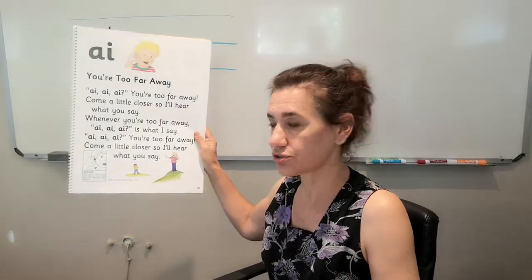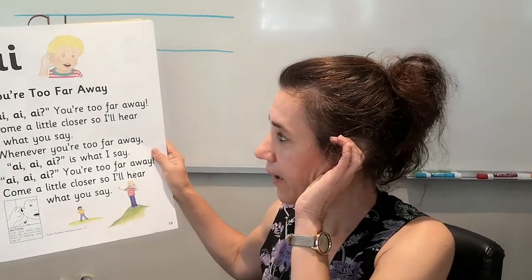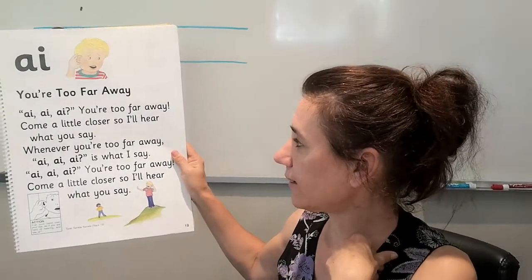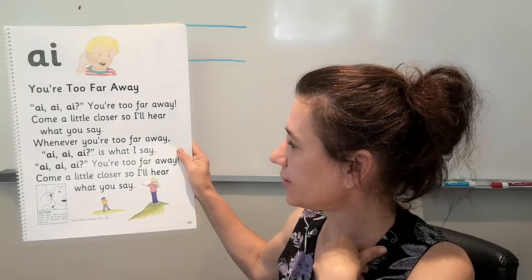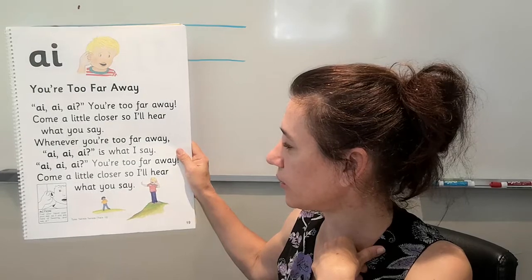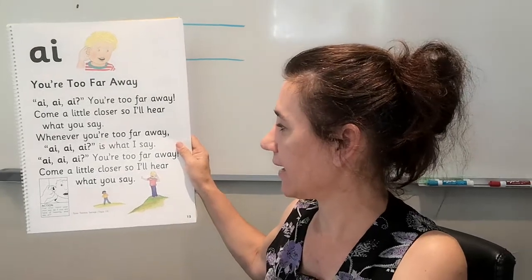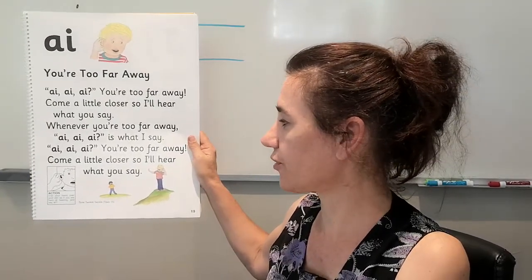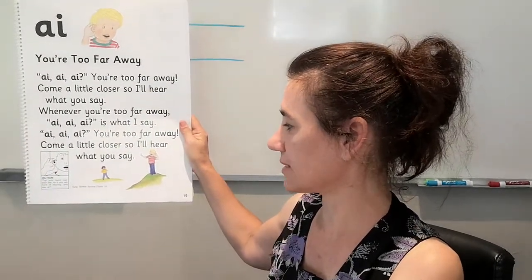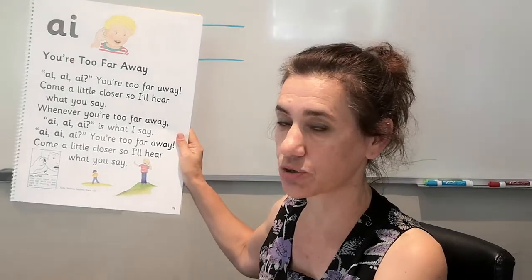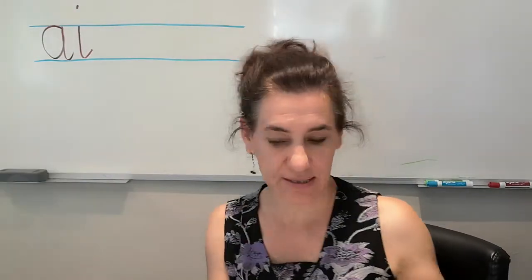And I want to sing the song to you. AI, AI, AI, you're too far away. Come a little closer so I hear what you say. Whenever you're too far away, AI, AI, AI is what I say. AI, AI, AI, you're too far away. Come a little closer so I hear what you say. Maybe you can sing it much better than me. Good.